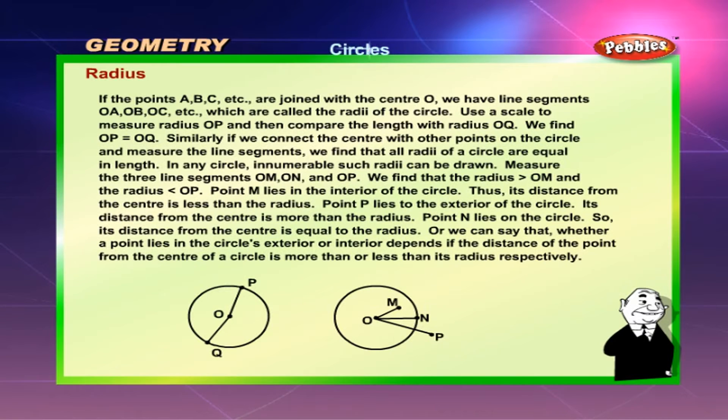Measure the three line segments OM, ON and OP. We find that the radius is greater than OM and the radius is lesser than OP. Point M lies in the interior of the circle. Thus, its distance from the center is less than the radius.